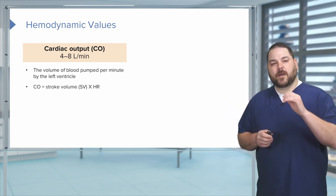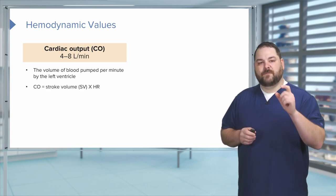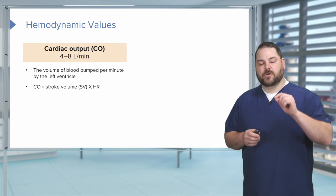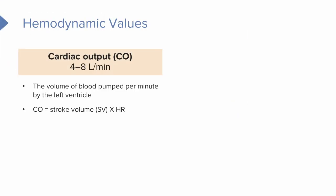Cardiac output is stroke volume times heart rate. It's difficult to talk about cardiac output without understanding stroke volume. Stroke volume is how many milliliters of blood is ejected from that left ventricle per beat. So cardiac output equals stroke volume times heart rate.